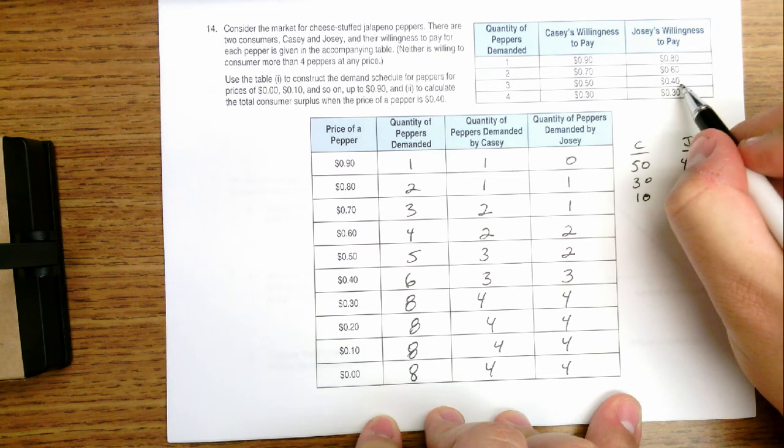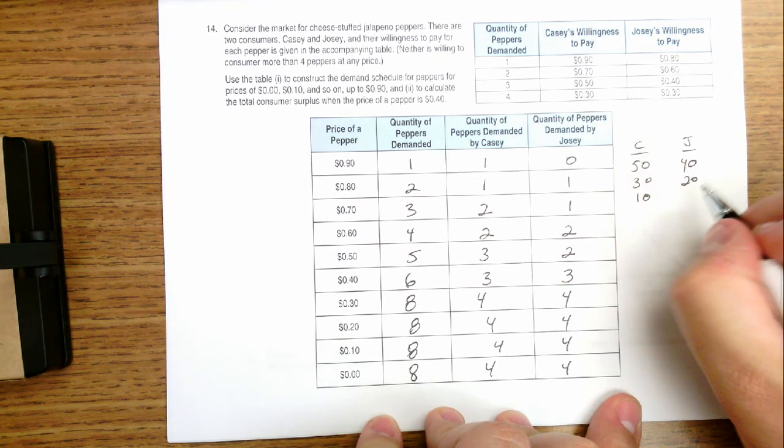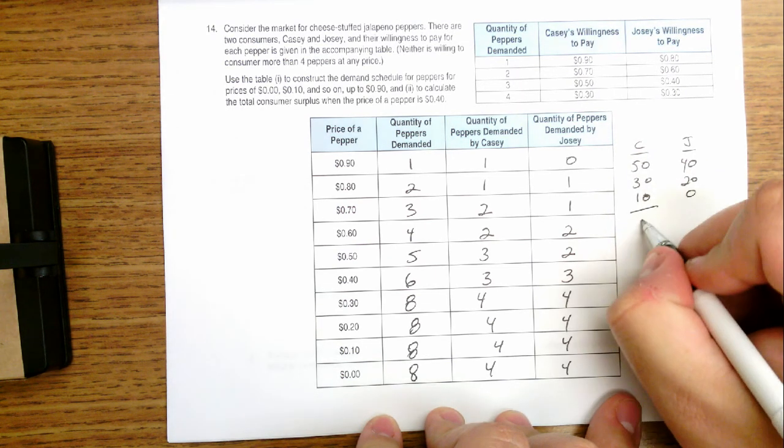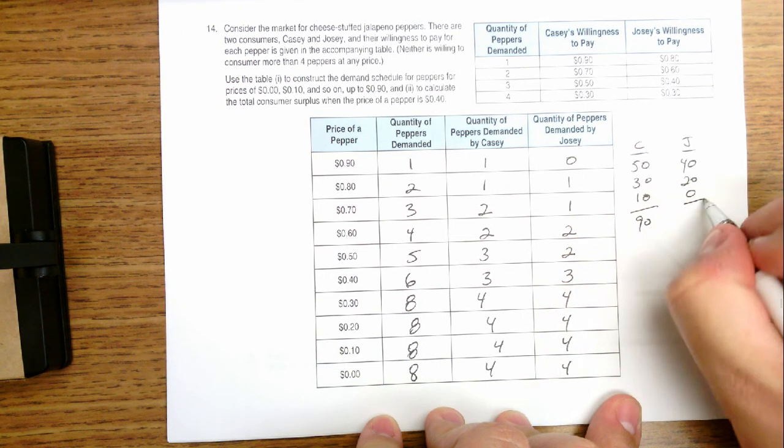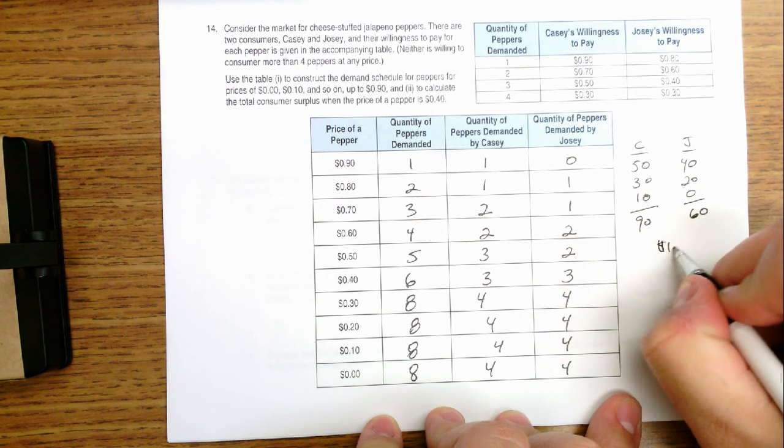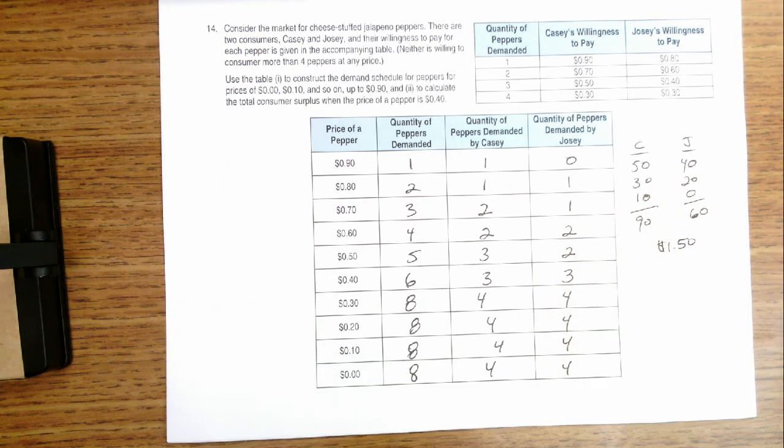And no consumer surplus, because she was willing to pay $0.40, and she has to pay $0.40 for her third pepper. So Casey has $0.90 of surplus. Josie has $0.60 of surplus. If we add them together, we find that the total surplus in the market is $1.50.